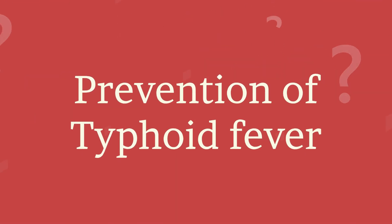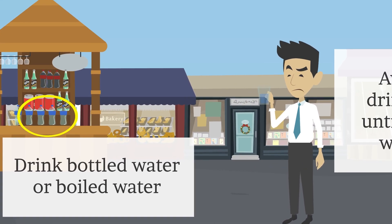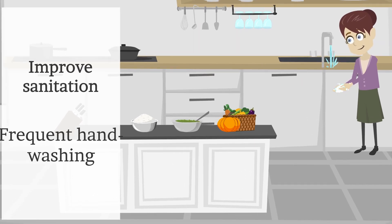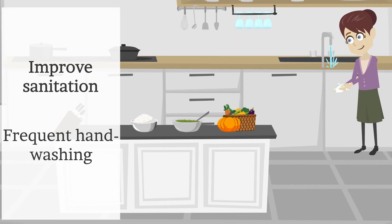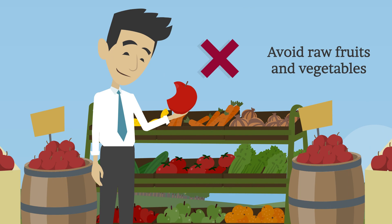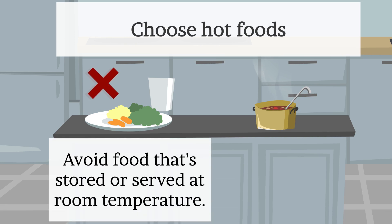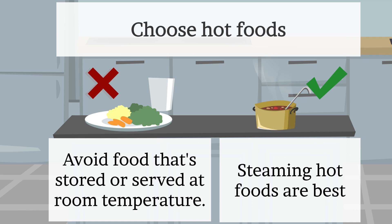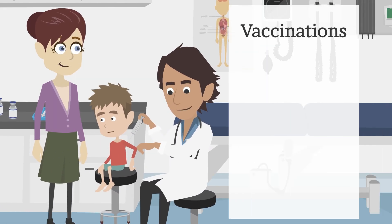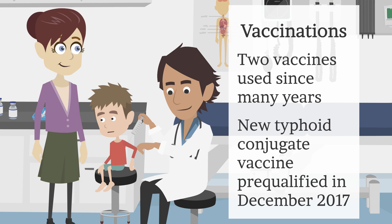Now let us see how we can prevent and control typhoid fever. Avoid drinking untreated water — drink only bottled water or boiled water. Improve sanitation. Frequent hand washing before eating or preparing food, and after using the toilet, is the best way to control infection. Avoid raw fruits and vegetables because they may have been washed in contaminated water. Try to avoid food from street vendors. Choose hot foods and avoid food stored or served at room temperature. Steaming hot foods are best. Another way to prevent typhoid fever is vaccination. Two vaccines have been used for many years, and a new typhoid conjugate vaccine with longer-lasting immunity was pre-qualified by WHO in December 2017.